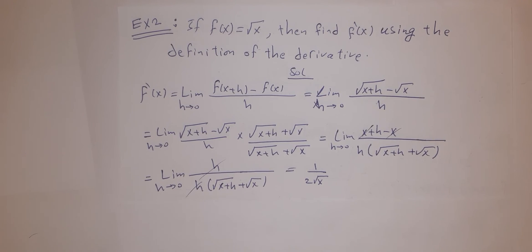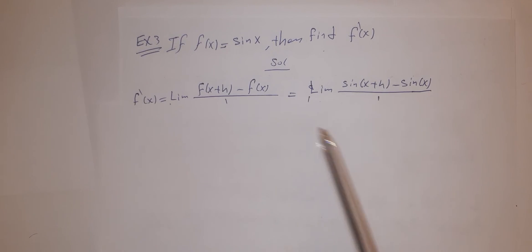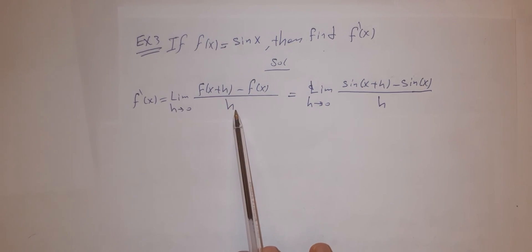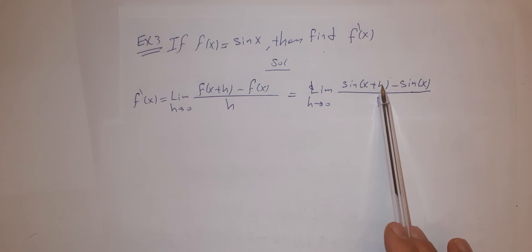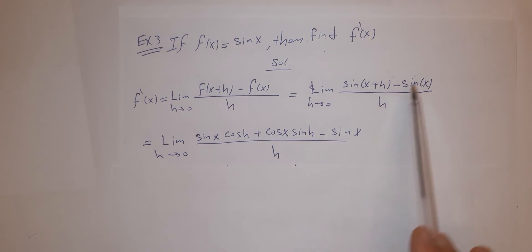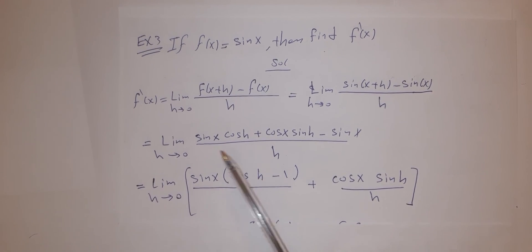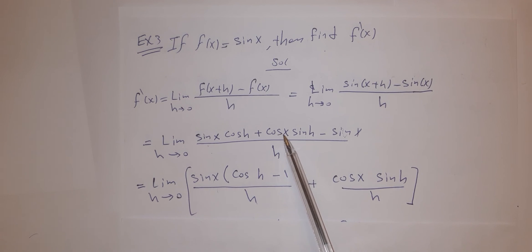Example three: if f(x) = sin(x), find f prime of x. Write the rule: f prime = limit of [sin(x+h) − sin(x)] / h as h→0. Expand sin(x+h) using the addition formula: sin(x)cos(h) + cos(x)sin(h) − sin(x), all over h. Factor out sin(x) as a common factor from the first and third terms: sin(x)·[cos(h) − 1] / h + cos(x)·sin(h) / h.